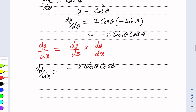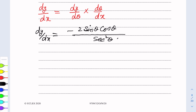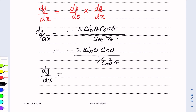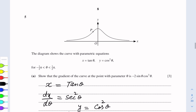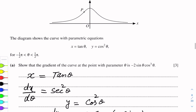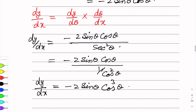Since the reciprocal of dx over d theta is d theta over dx, sec squared theta goes in the denominator. Sec squared theta equals 1 over cos squared theta. So dy over dx becomes minus 2 sin theta cos theta divided by 1 over cos squared theta. The cos squared theta comes to the numerator and multiplies with cos theta, giving cos cubed theta. Therefore dy over dx equals minus 2 sin theta cos cubed theta. This is what we needed to show — the gradient of the curve is confirmed.